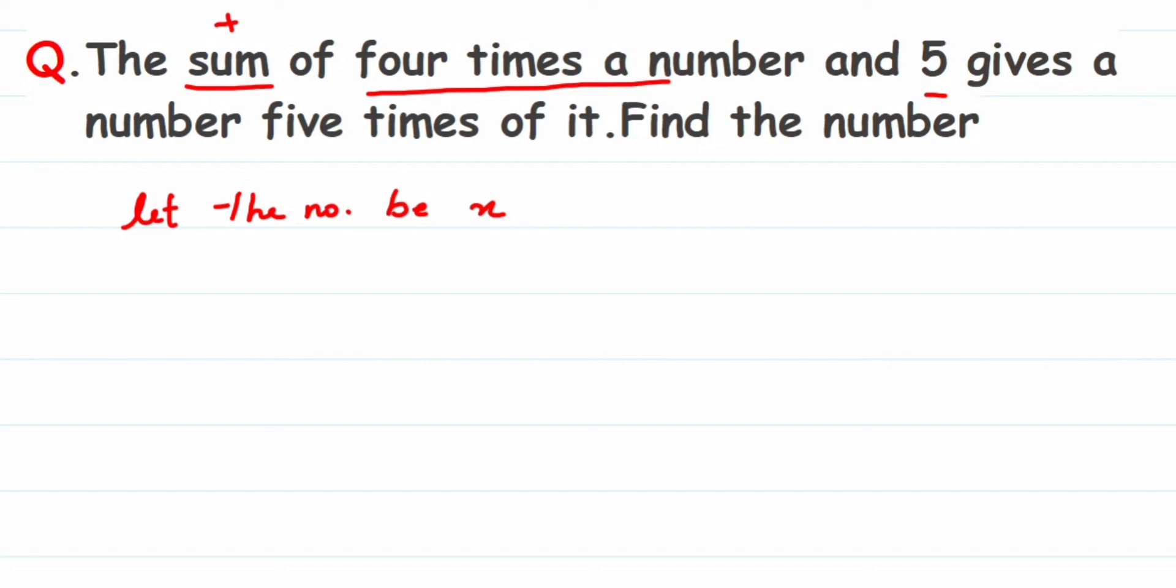Now what is this four times a number? Let me write down what is four times a number. Four times - here times means nothing but multiplication. So four times a number means four multiplied by x, which is nothing but 4x.